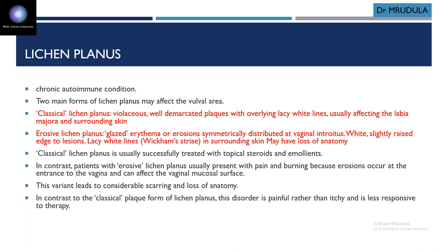Lichen planus is also a chronic inflammatory condition. There are two main forms affecting the vulva: classical lichen planus and erosive lichen planus — these are totally different. Classical lichen planus presents with violaceous, well-demarcated plaques with overlying lacy white lines, usually affecting the labia majora and surrounding skin.